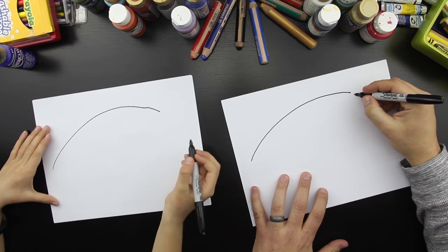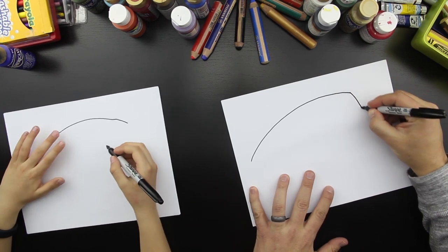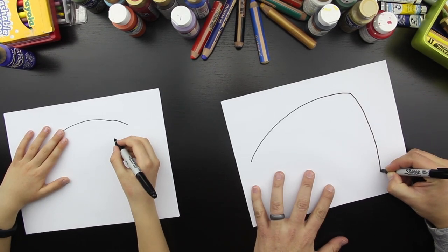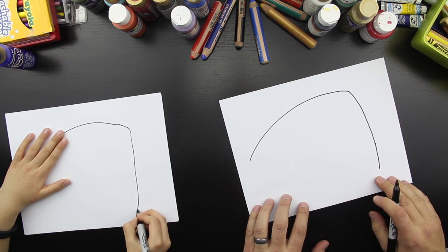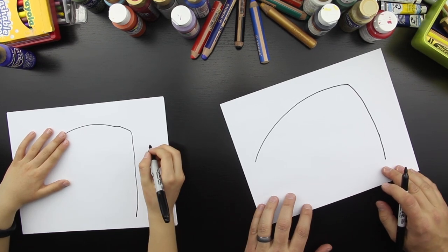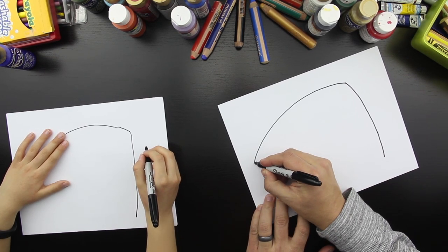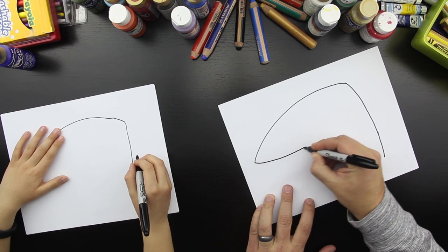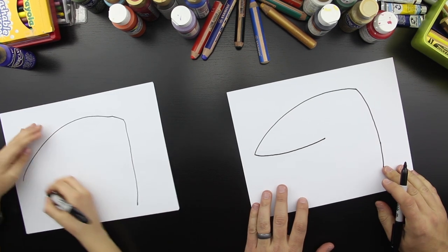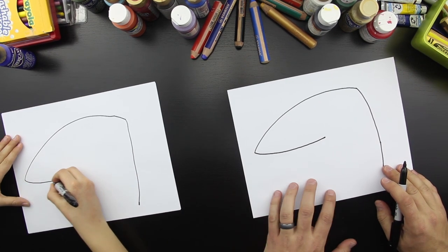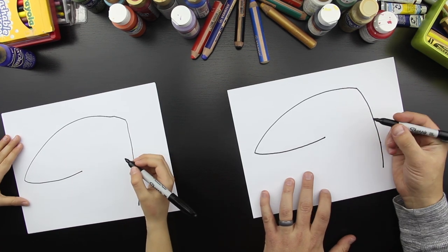Good job. And then we're going to draw another arc down and leave a little room down here. Now let's draw the rest of his beak. I think this is going to be a big beak. Toucans have huge beaks and lots of colors.